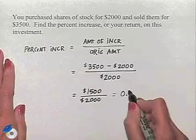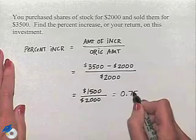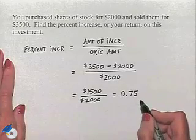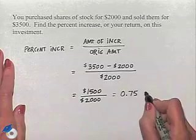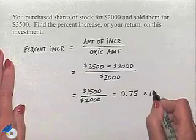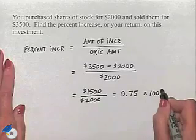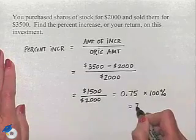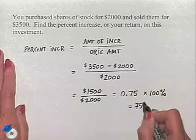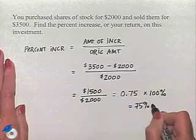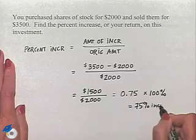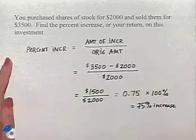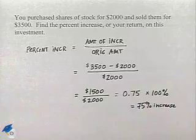Of 3 fourths, which can be written as a decimal, as .75. We multiply that times 100% to come up with a 75% increase. And when we're dealing with stocks, that would be considered our return.